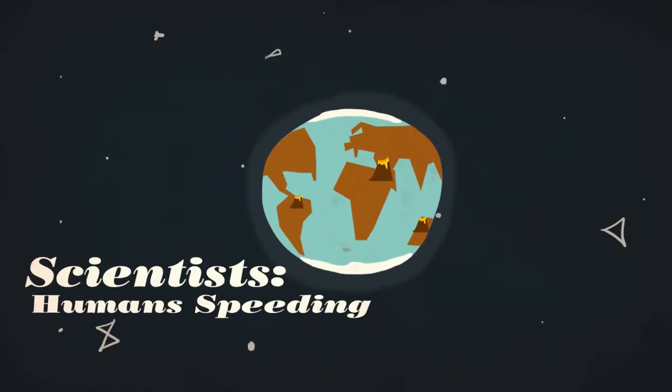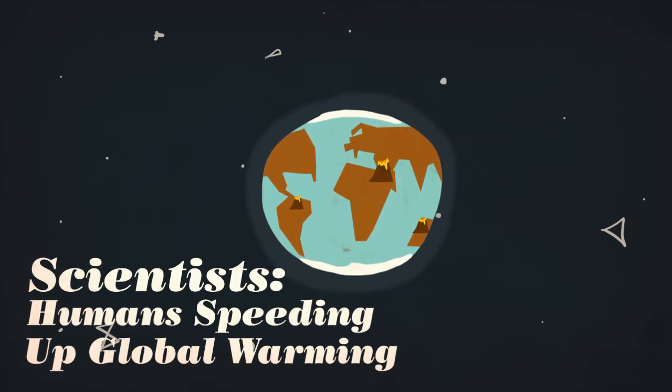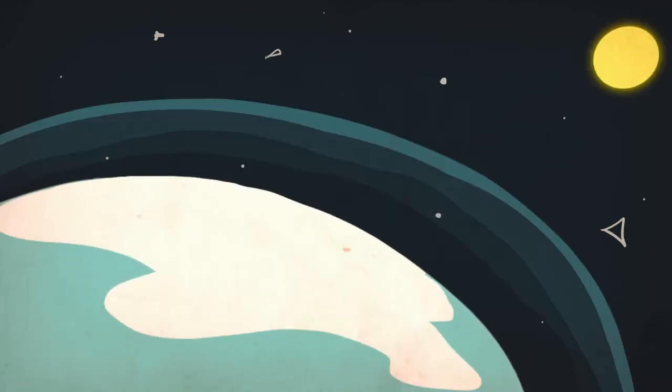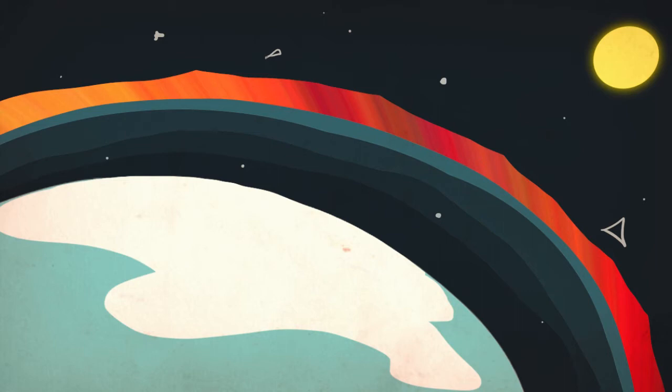But scientists consider that humans are speeding up these changes. The energy that warms the Earth comes from the Sun. Incoming radiation is absorbed by the land and the oceans. Some radiation is bounced off back into space, but part of it gets trapped in the Earth's atmosphere by gases. Greenhouse gases like carbon dioxide form an insulating blanket around the Earth, keeping it warm.